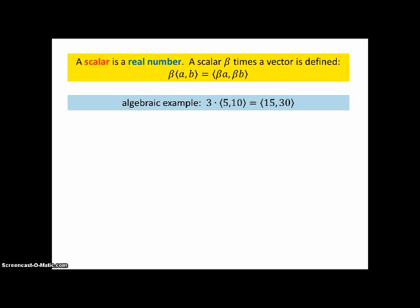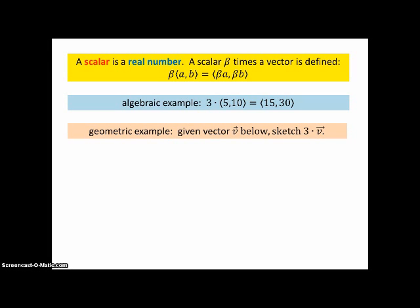An algebraic example: 3 times the vector (5, 10) is the vector (15, 30). A geometric example, given vector V below, sketch 3 times V. Well, it's just the same as adding V plus V plus V. So there's three V's, and so the vector that represents 3V looks like the red one.